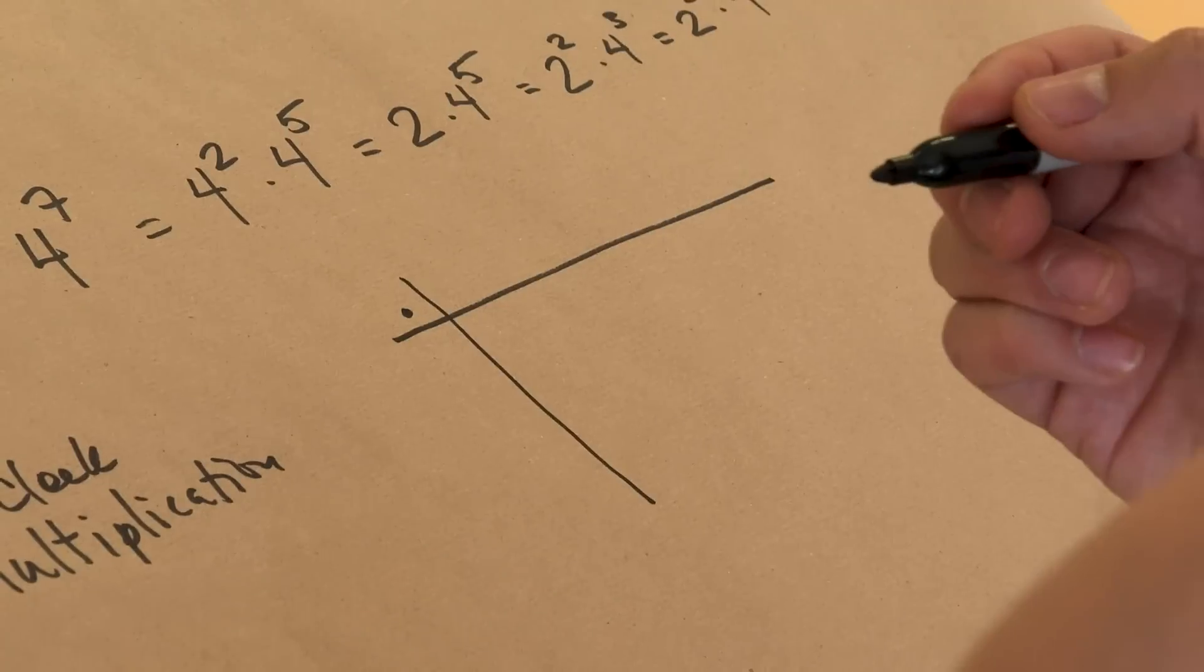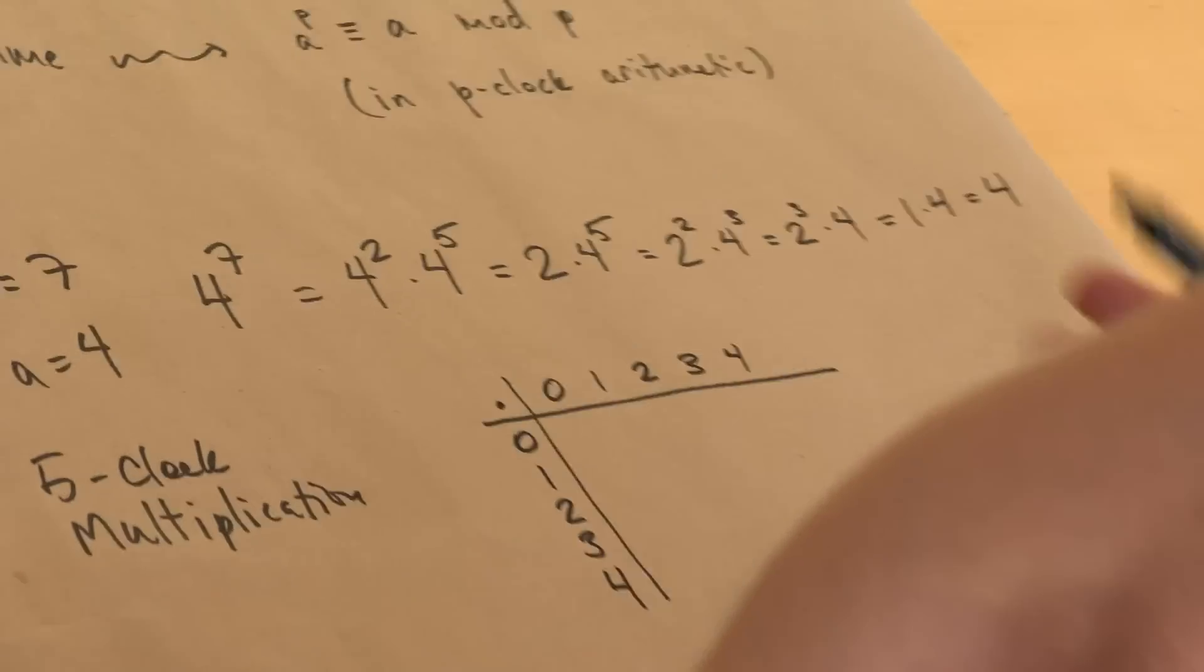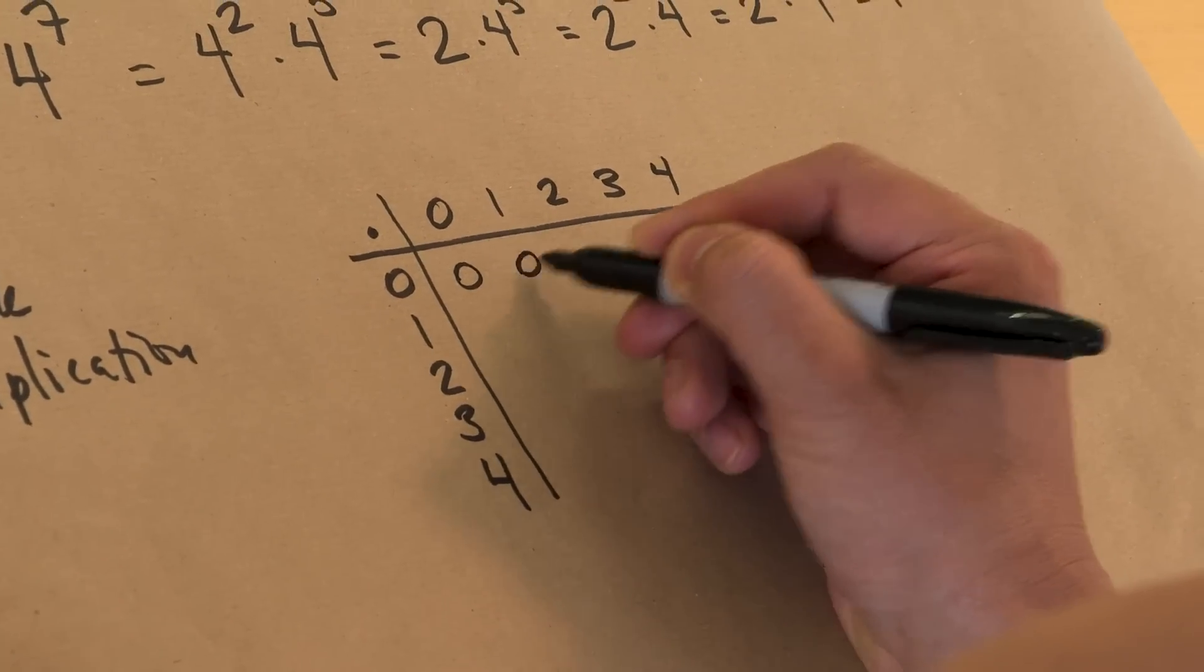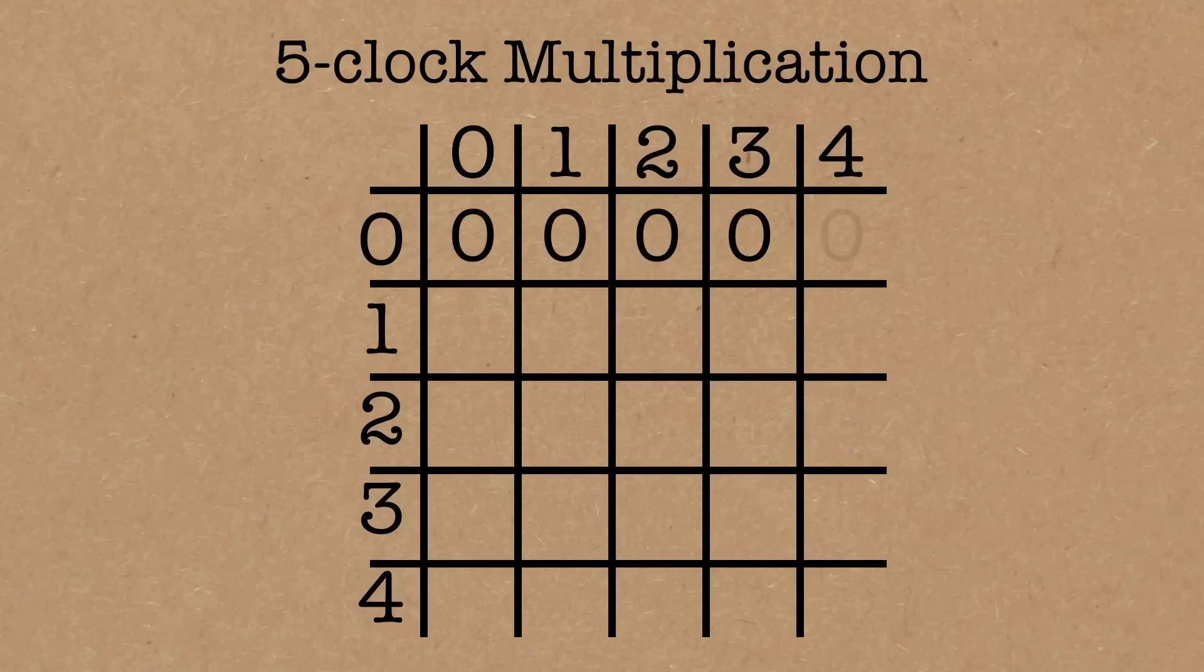So on my clock, I prefer the numbers 0, 1, 2, 3, 4 instead of 1, 2, 3, 4, 5. Well of course, 0 times anything is 0, so I can fill in some of these things very quickly. Same thing in the other order.